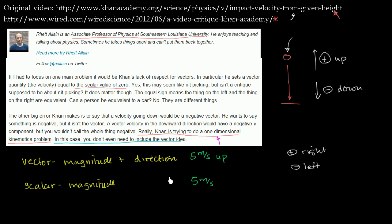So it's a very wrong statement that in a one-dimensional kinematics problem you don't need to include the vector idea, because later on we build on this video where the ball actually does switch directions. If you don't involve the vector idea, there's no real easy way to express that switching of directions even in the one-dimensional case. Once you have that convention — positive is up and negative is down — it's completely legitimate to say that the velocity vector can be zero, meaning it's stationary, neither going up nor down. I really do appreciate the feedback from Rhett Ehlin because I think it introduced a very important conversation.